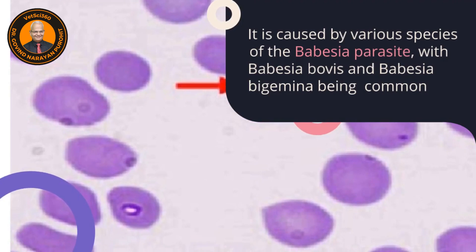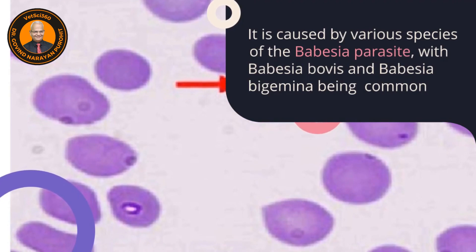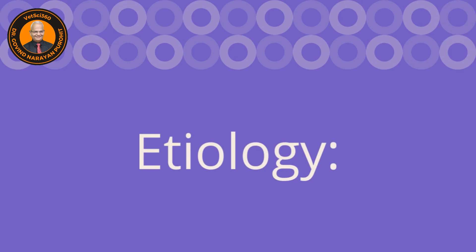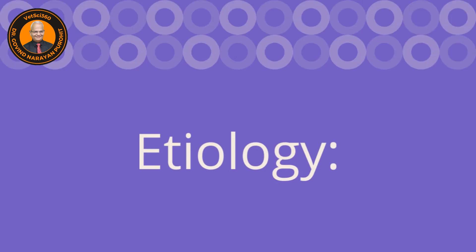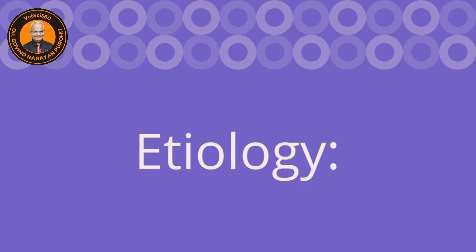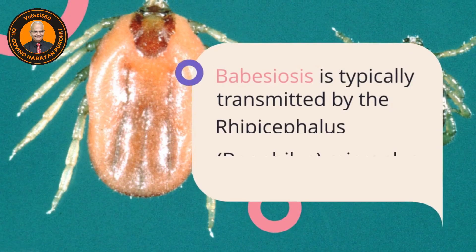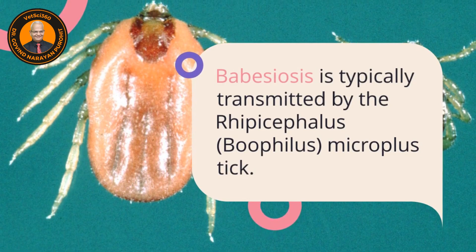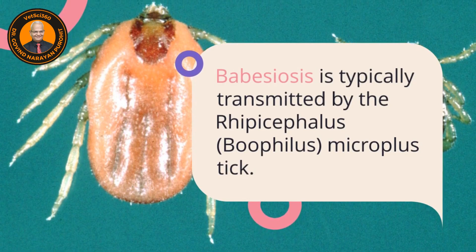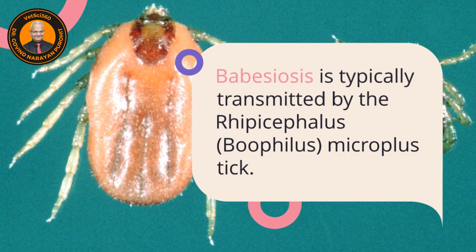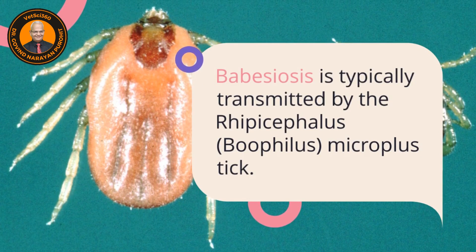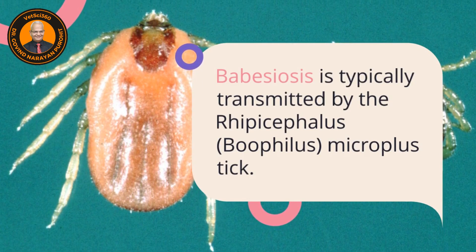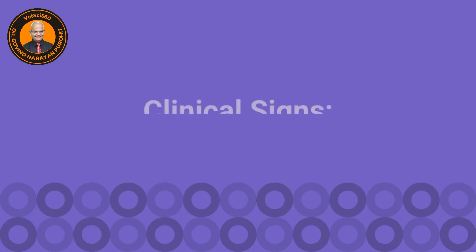You can see the Babesia in the erythrocytes in the picture. The etiology of babesiosis is typically transmitted by the Rhipicephalus or Boophilus microplus tick, which transmits the organism into the blood of cattle.